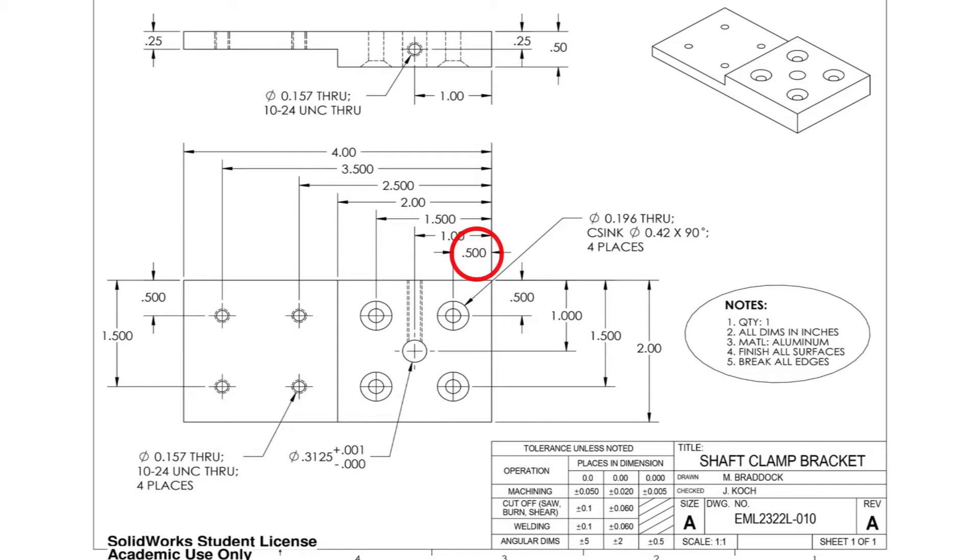Now reference the tolerance table and line up the precision with the process. In this case, our tolerance is plus or minus five thou. This means our feature can be between .495 and .505.